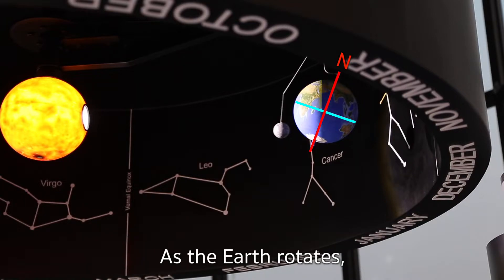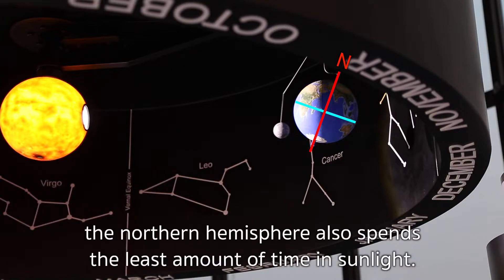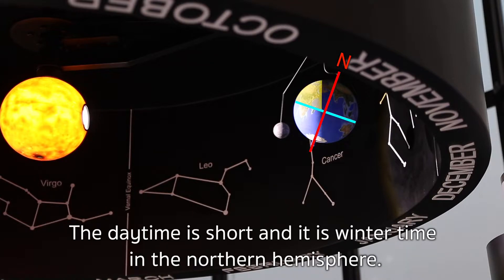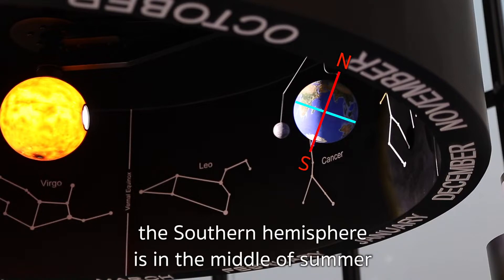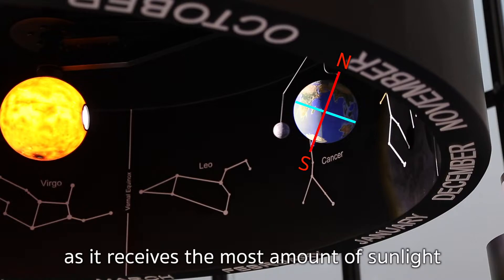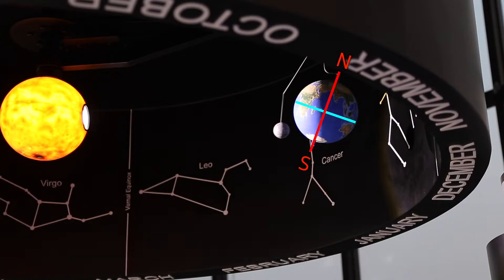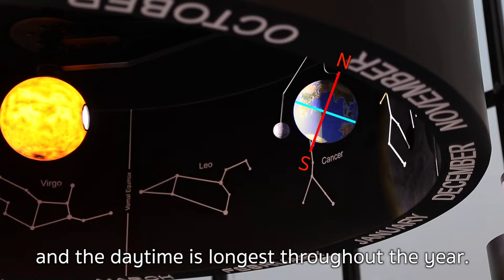As the Earth rotates, the Northern Hemisphere also spends the least amount of time in sunlight. The daytime is short, and it is wintertime in the Northern Hemisphere. Meanwhile, the Southern Hemisphere is in the middle of summer, as it receives the most amount of sunlight, and the daytime is longest throughout the year.